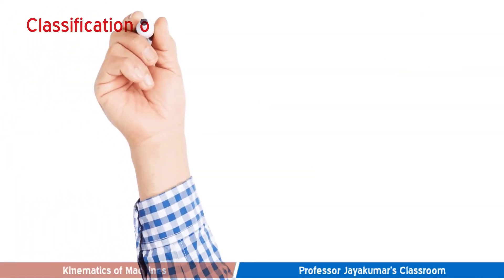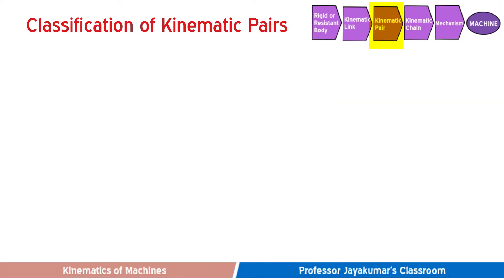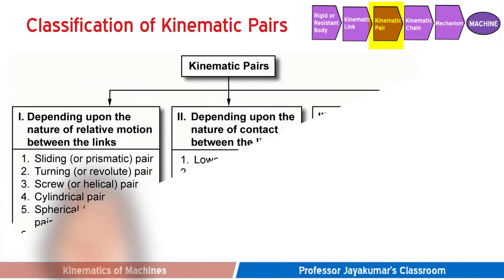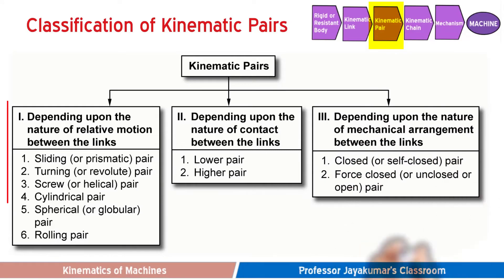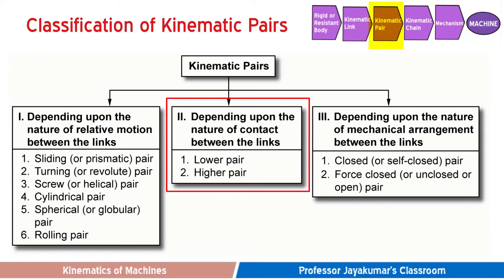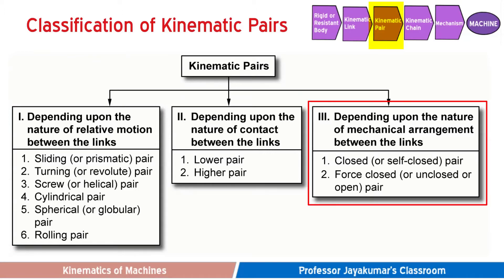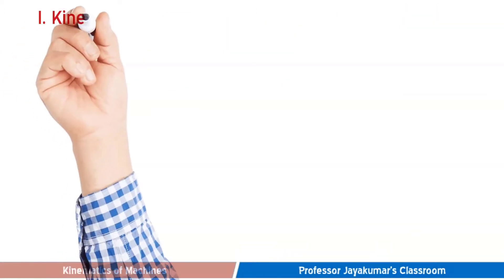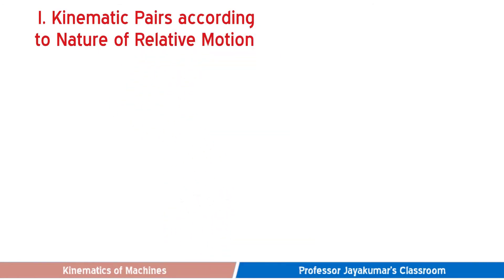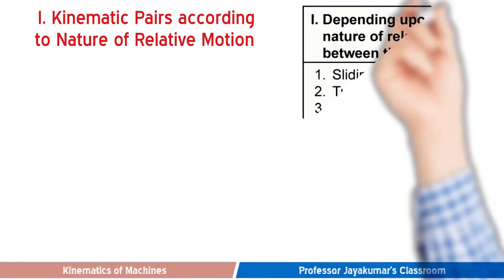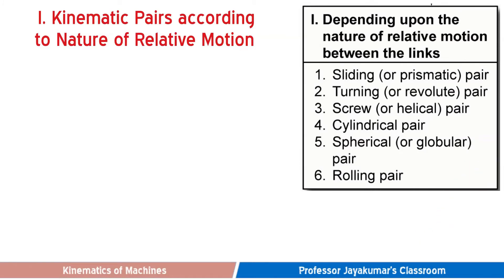Now we shall classify kinematic pairs. Kinematic pairs can be classified into many types based on three considerations: depending upon the nature of the relative motion between the links, depending on the nature of contact between the links, and depending on the nature of mechanical arrangement between the links. Kinematic pairs based on the nature of relative motion can be classified into six types: sliding pair, turning pair, screw pair, cylindrical pair, spherical pair, and rolling pair.